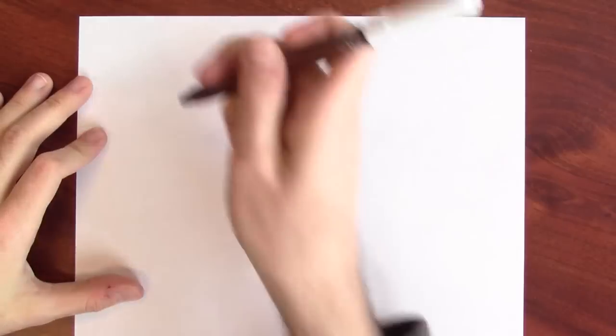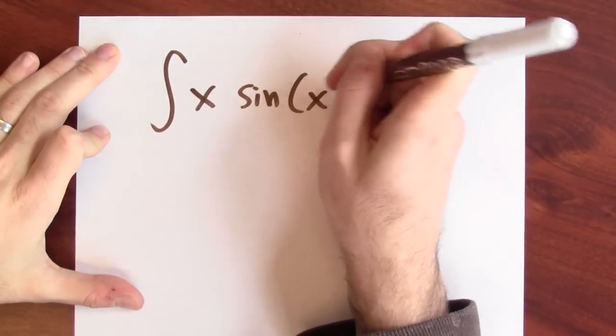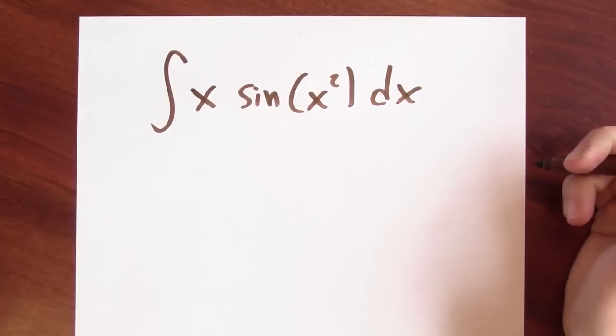In order to integrate a complicated function, I really just want to anti-differentiate complicated functions. For example, can I anti-differentiate x times sine of x squared dx?